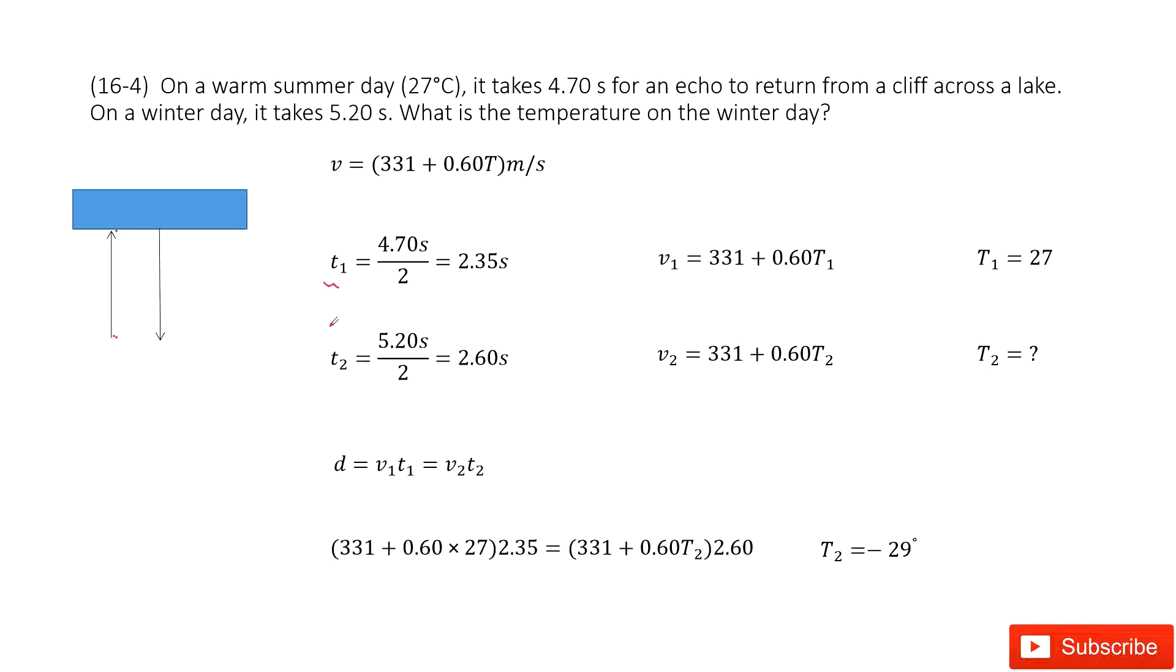So in this one, we get the t1 and t2. And also, no matter in winter or summer, the distance from the person to the object is a constant. So d equals v1 t1 equals v2 t2.